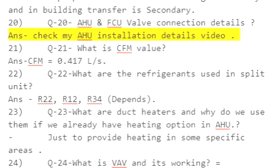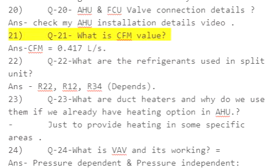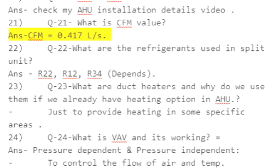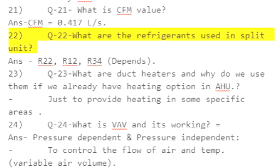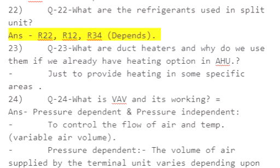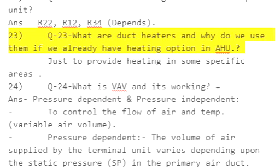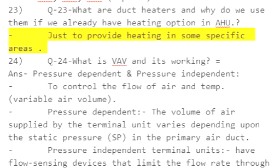Q21: What is CFM value? Answer: CFM equals 0.41 per step. Q22: What are the refrigerants used in split units? Answer: R-22, R-12, R-134 — depends on system. Q23: Water duct heaters — why do we use them if we already have a heating option in the AHU? Answer: Just to provide heating in some specific areas.